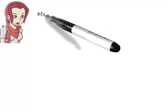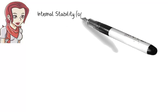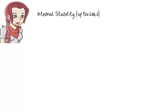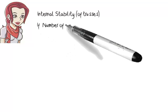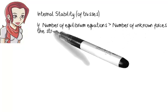Now, let's turn our attention to internal stability of structures. The discussion generally comes up when dealing with trusses. Assuming a truss is externally stable, we can determine its internal stability in one of two ways. The simplest way is to compare the number of equilibrium equations to the number of unknowns for the truss. If the number of equations exceeds the number of unknowns, the structure is considered unstable.